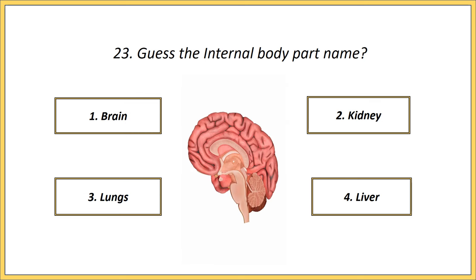Twenty-third one. Guess the internal body part name. Options: brain, kidney, lungs, liver. Answer is brain.